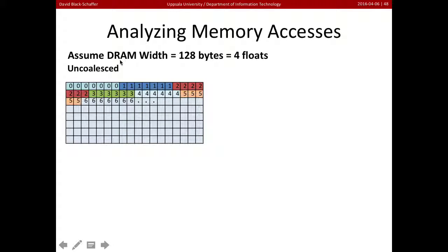Let's make a simple assumption here. Let's assume that every time we access DRAM we read 128 bytes or four floats. Now the access pattern we have here is uncoalesced. Thread zero is going to read these four floats when it just wants the first one. Thread one is going to read these four when it just wants the first one. So we've now read eight floats here even though we really only want to process two of them.